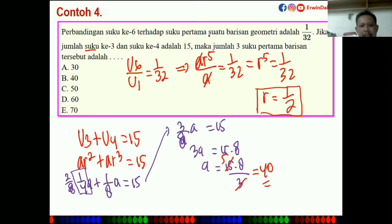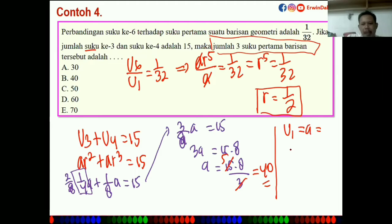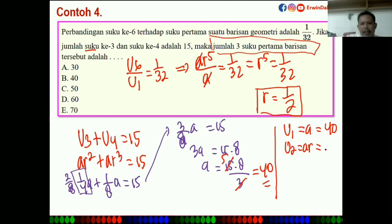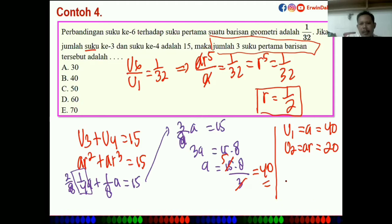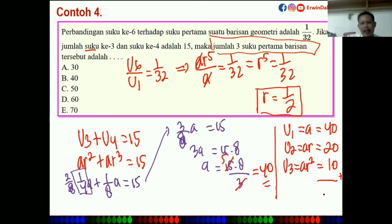Yang ditanya adalah jumlah 3 suku pertama. U1 = A = 40, U2 = AR = 40 × 1/2 = 20, U3 = AR² = 40 × 1/4 = 10. Dijumlahkan: 40 + 20 + 10 = 70. Bisa juga pakai S3, tapi langsung jumlah lebih mudah.